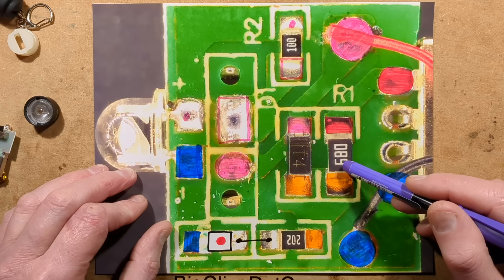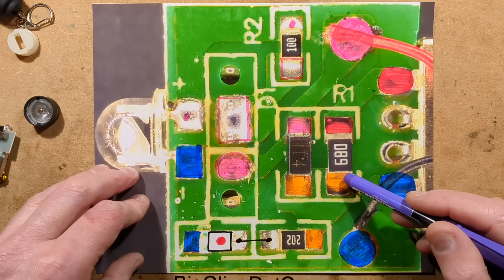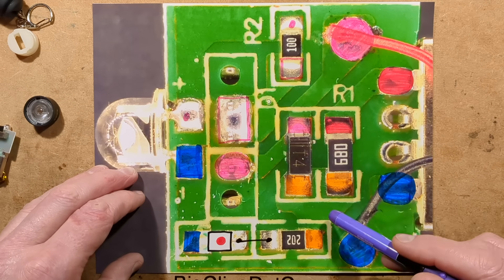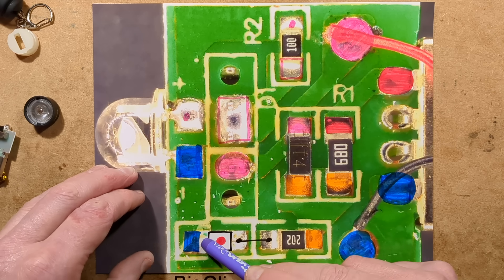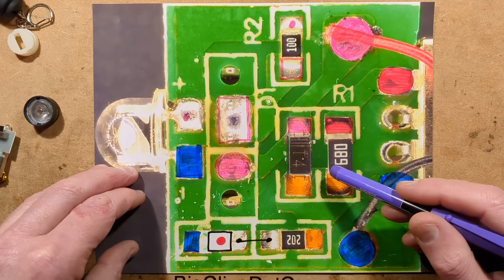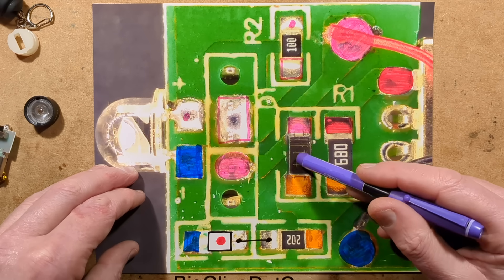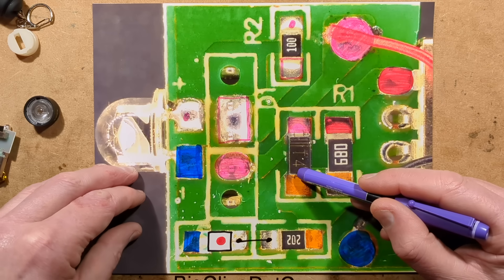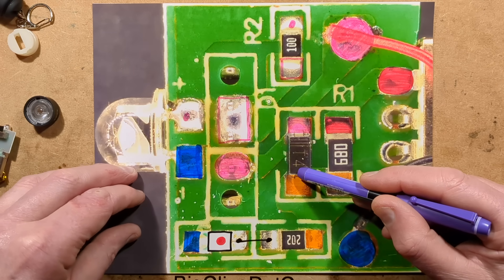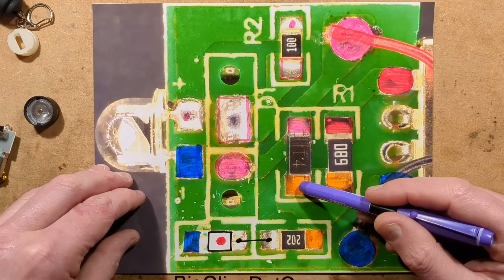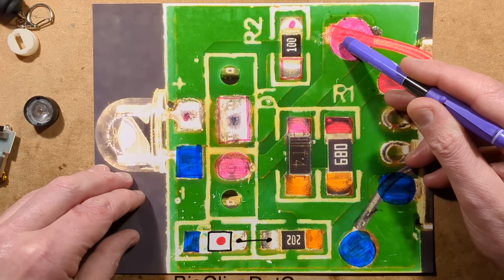It's just 6.8 ohms. And then it goes from there via this 2K resistor through the red LED, the charge indicator LED, and also via this T4 diode, which is just basically a surface mount version of the classic 1N4148 diode. Standard silicon diode, and it goes to charge the lithium cell.